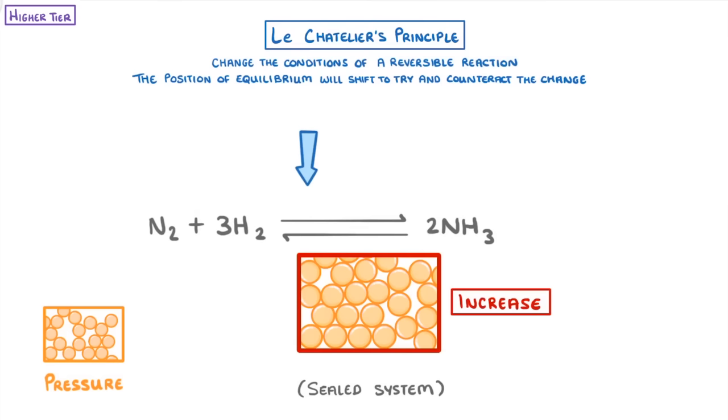And as pressure is basically just a measure of how many particles there are per unit of volume, to lower the pressure, the equilibrium would move to the side with the least number of molecules, which in this case is the right, because there are only two molecules of ammonia on the right-hand side, whereas there's four molecules on the left, because there's one nitrogen plus three hydrogens.